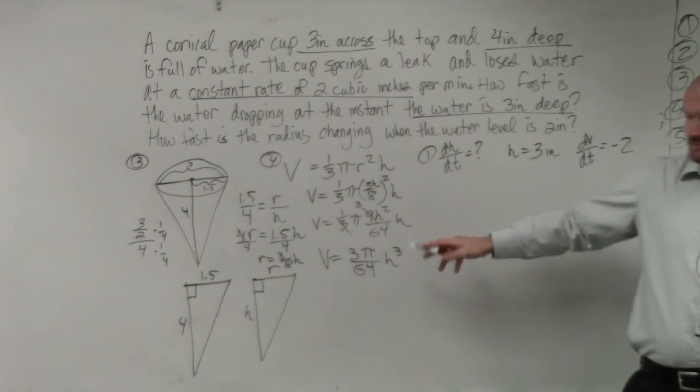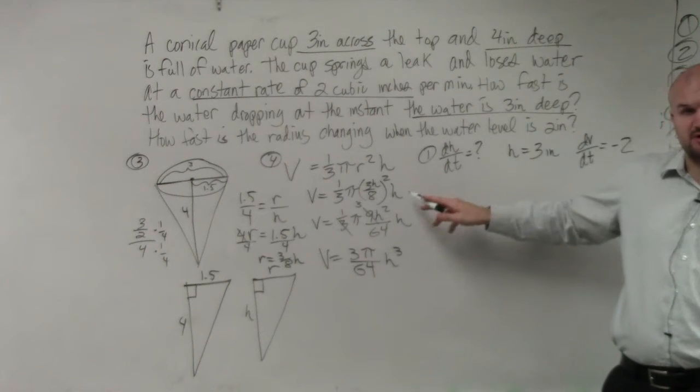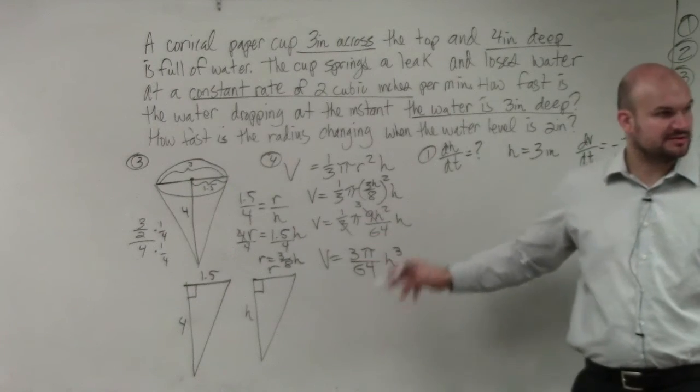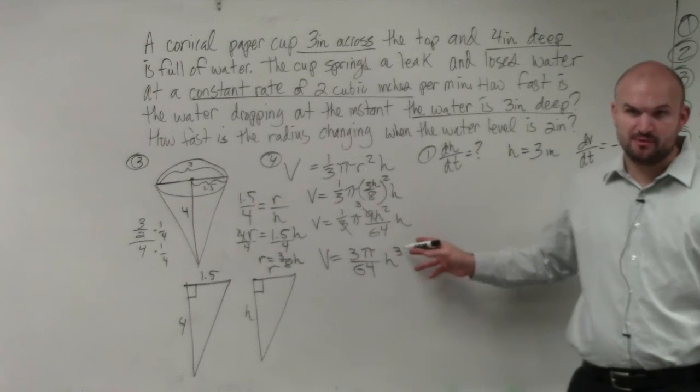Volume equals 3π over 64 and then h³. h² times h. Because you had to square the h inside here and then multiply it by h. So, therefore, you're getting h³. And I'm just writing the constant out in front. Because this is all a constant and this is my one variable.